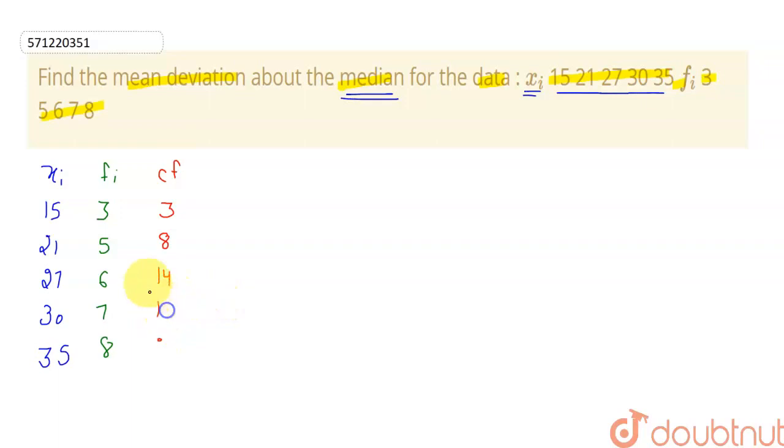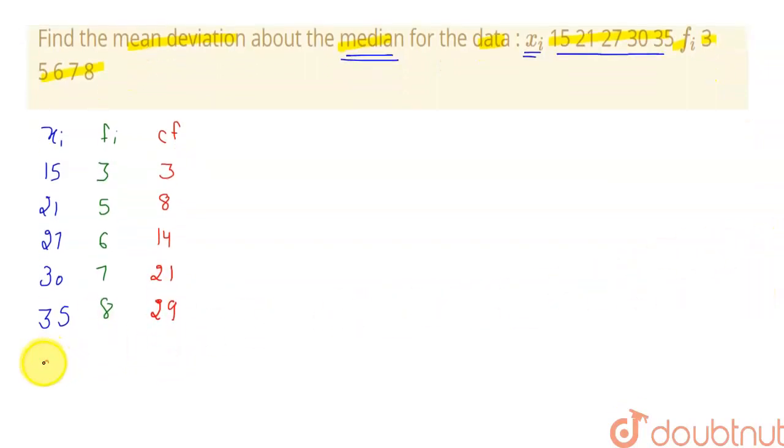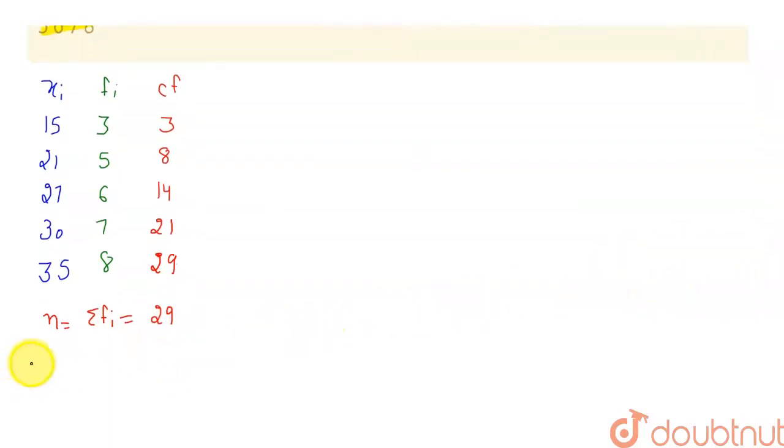Wait a minute. 14 plus 7 will give me 21. 21 plus 8 will give me 29. So there are total 29 number of data. So I can write n or I can say sigma of f_i is equal to 29. So we have to find the median. We have to look. This is odd. This is odd number of terms.